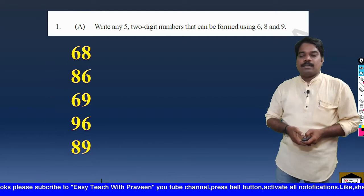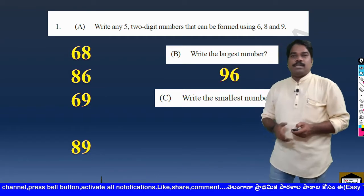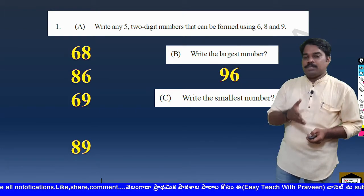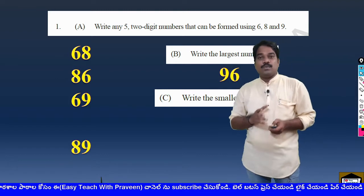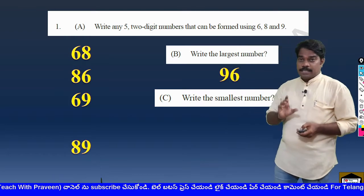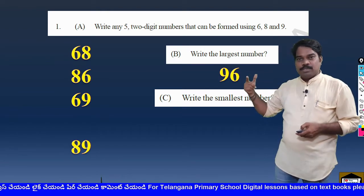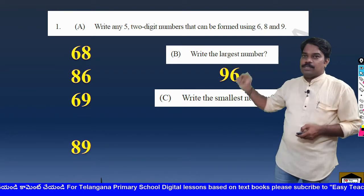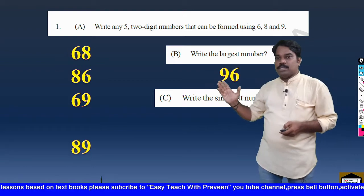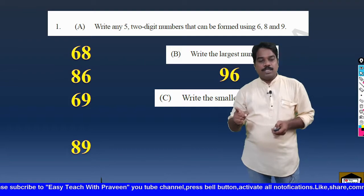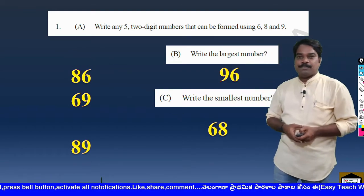Another question: Write the smallest number. To find the smallest number we observe the tens place carefully. In the tens place we have 6 and 8 as options — 6 is less and 8 is greater, so 6 is the smaller tens digit. Numbers with 6 in tens place are 68 and 69. Now we look at the ones place: 8 and 9 — 8 is the smaller, so 68 is the smallest number.